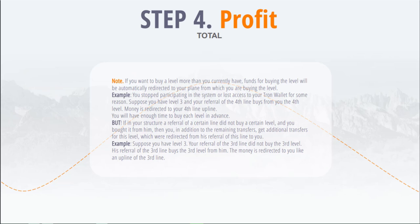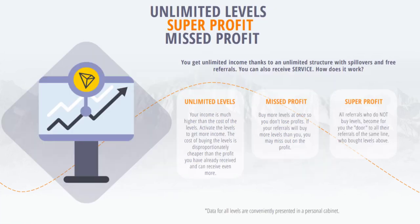For example, you have level 3. Your third-line referral did not buy the third level. His third-line referral buys the third level from him — money is redirected to you as the third-line upline. Unlimited level. Super profit. Lost profit. You get unlimited income thanks to an unlimited structure with overflows and free referrals. You can also earn super profits.